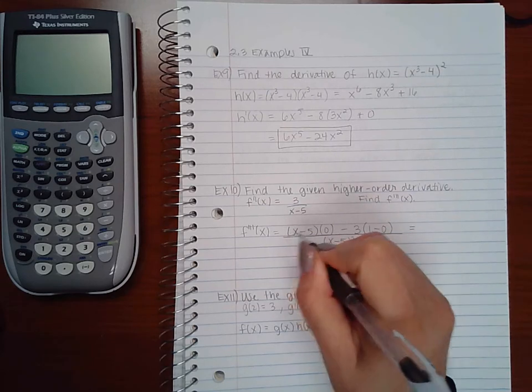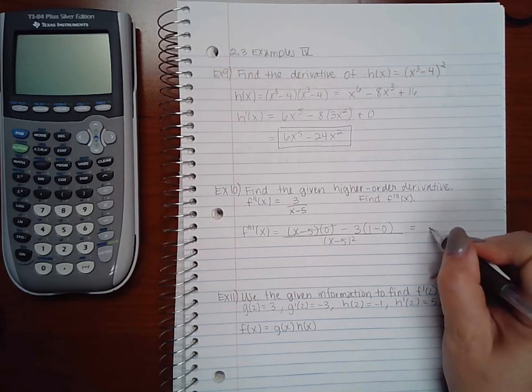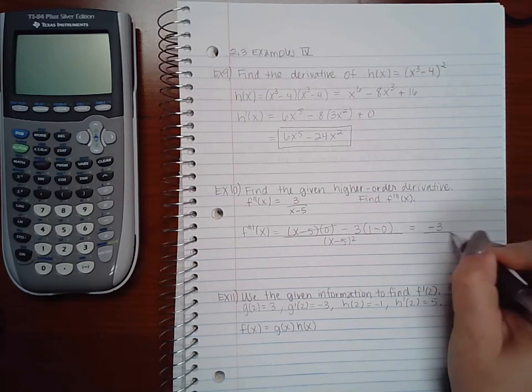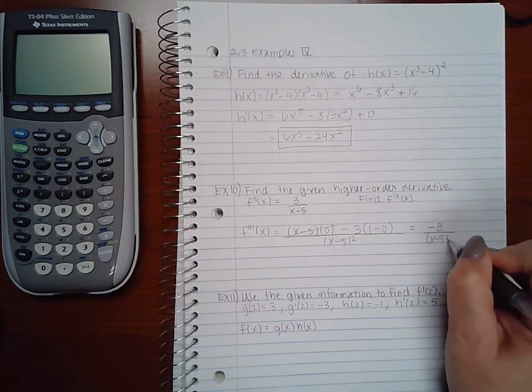So I'm going to get negative 3 over (x minus 5) squared.